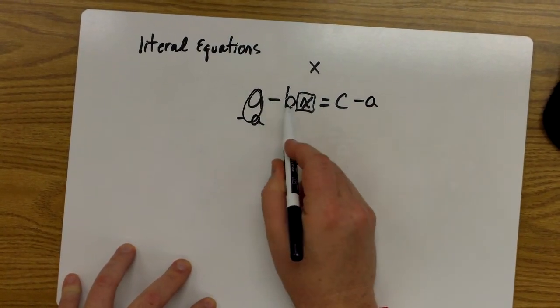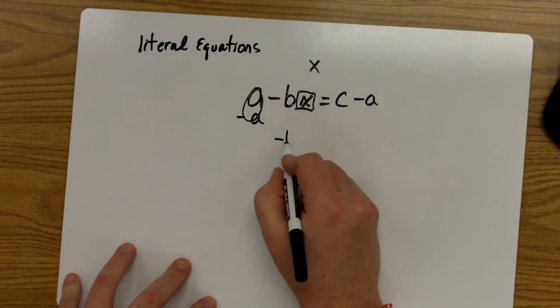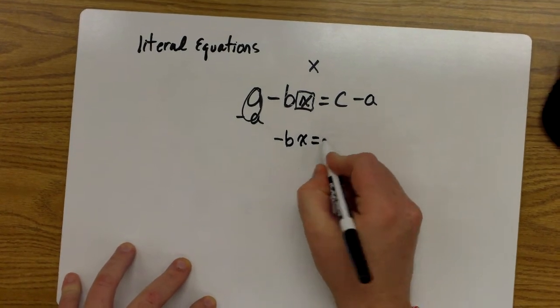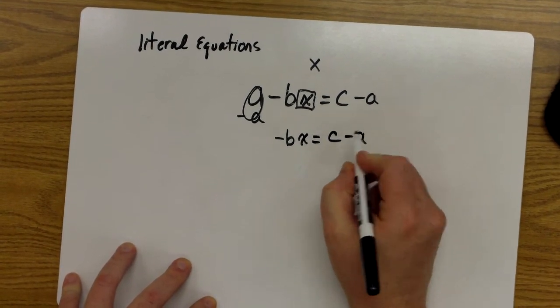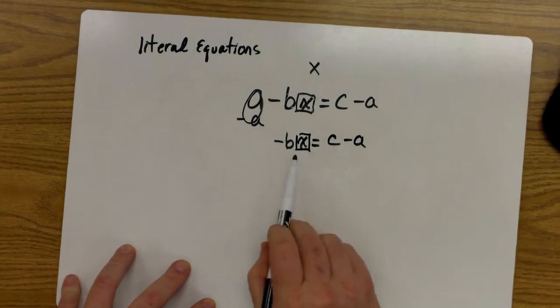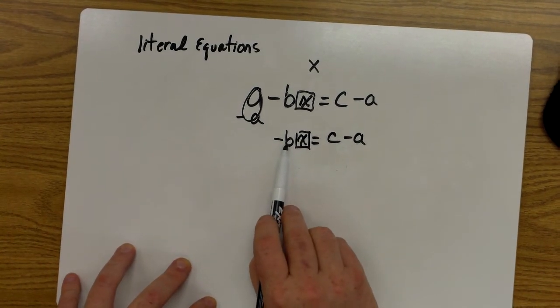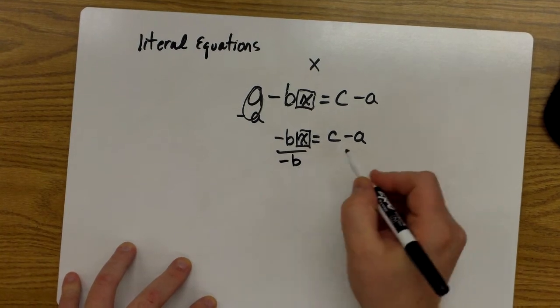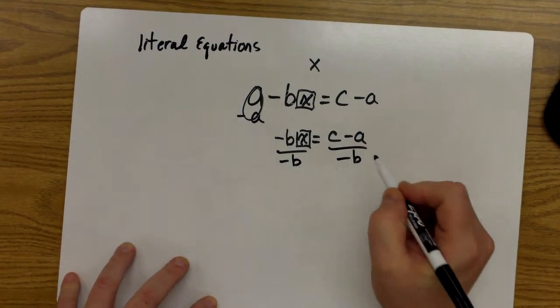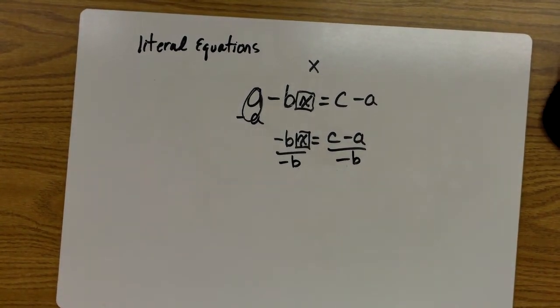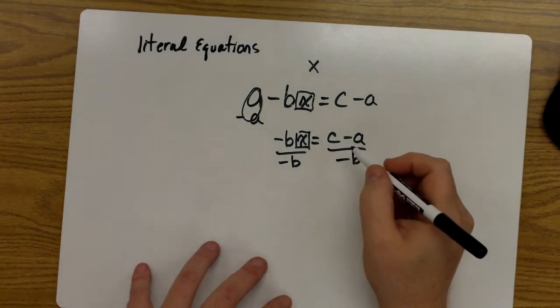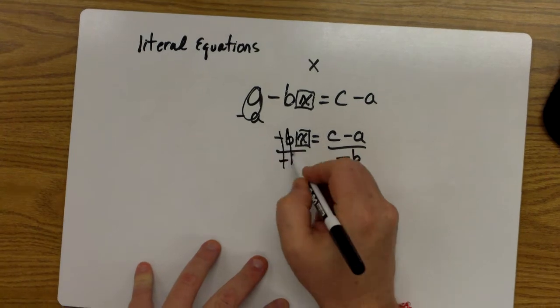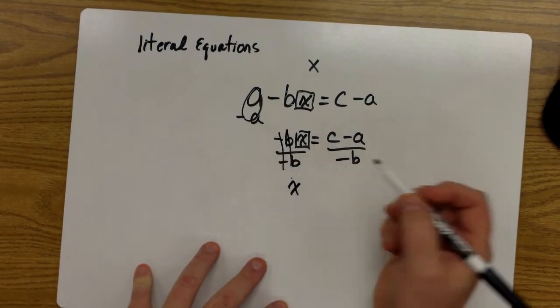This becomes zero. I still have a negative BX left over. And the way we undo this negative B times X is to divide by negative B on both sides. Now, this would become a positive 1, or X.